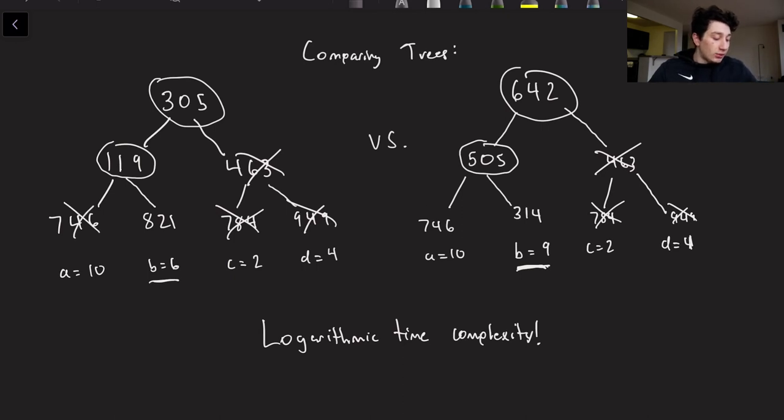So now moving on down our tree, we can see that 746 is equal to 746, so we've got no issues there. Like I said, A is 10 in both trees. But then finally, because 821 is different than 314, we found our difference between the two trees. It's just the fact that B is equal to 9 versus B is equal to 6.